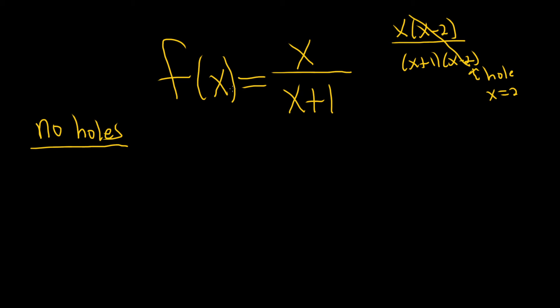But that didn't happen, so no holes. So after you simplify, which this is already done, you take the bottom and you set it equal to 0, and you solve.